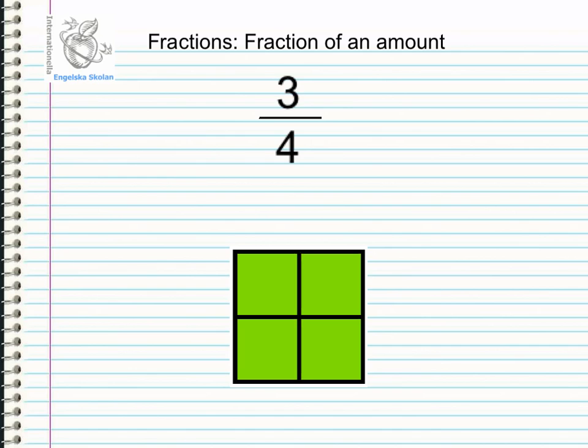The numerator, which is the number three, shows us how many of those parts which we have. We can represent this on the green square by coloring them in. So three quarters can be shown like this. We have three out of four.